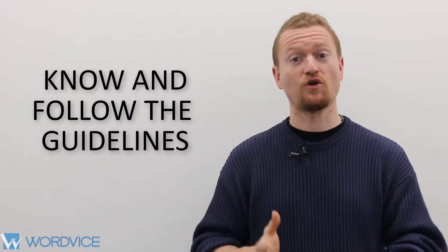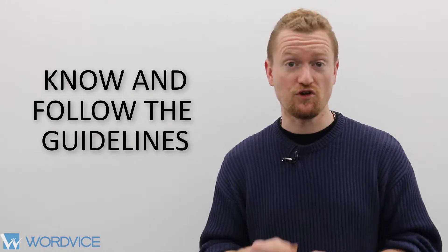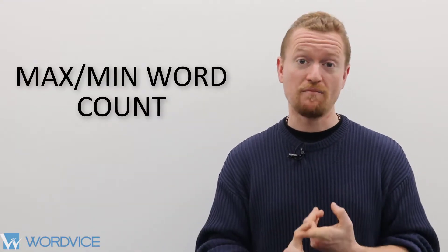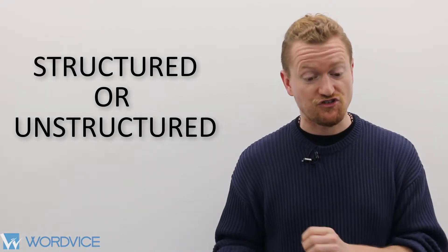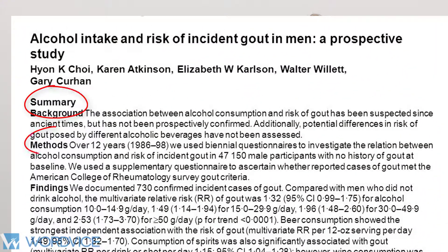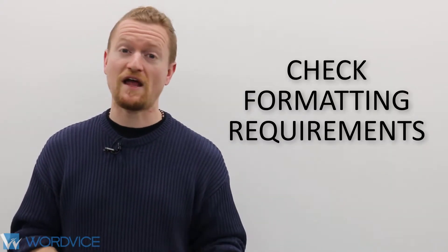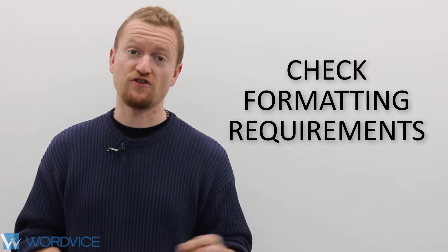You also want to make sure you research all of the guidelines for the journal or conference to which you're submitting before you write the abstract. Ask questions about the maximum or minimum word count. Ask, is your abstract structured or unstructured? A structured abstract has explicit headings that show which part of the abstract you're writing, whereas an unstructured abstract does not. You also want to be sure of any specific formatting requirements that the journal or conference will have.